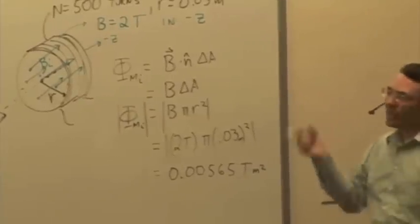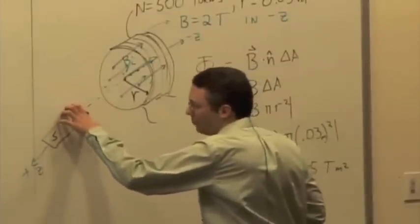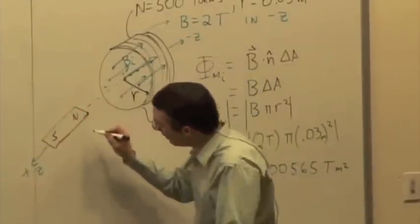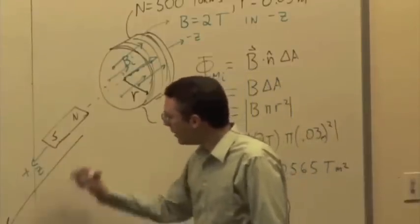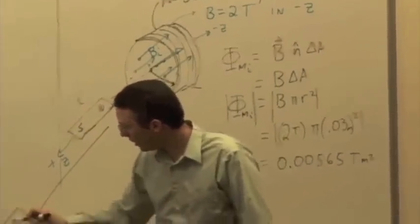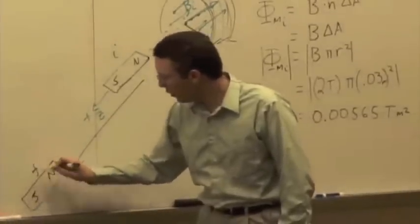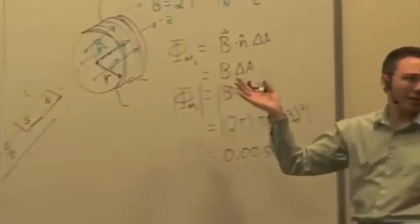So what I have to do instead is I have to change the magnetic field, and I'm going to change it by moving the bar magnet very far away. So the bar magnet's going to move that way, and this is the initial position. The final position is way down here, and I move it very far away.